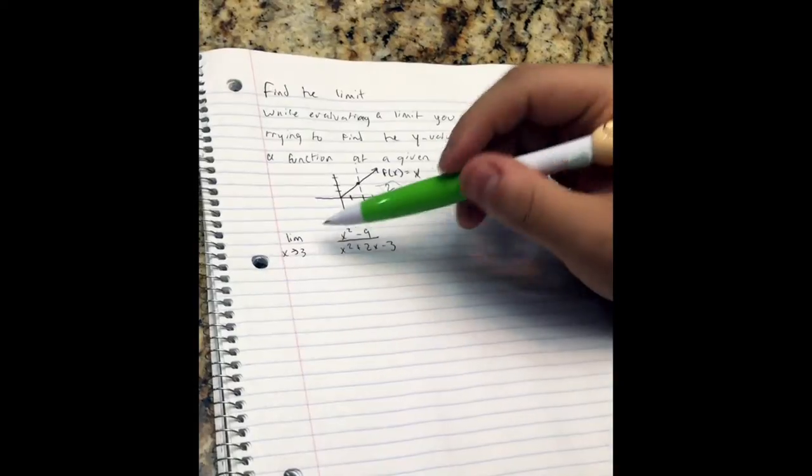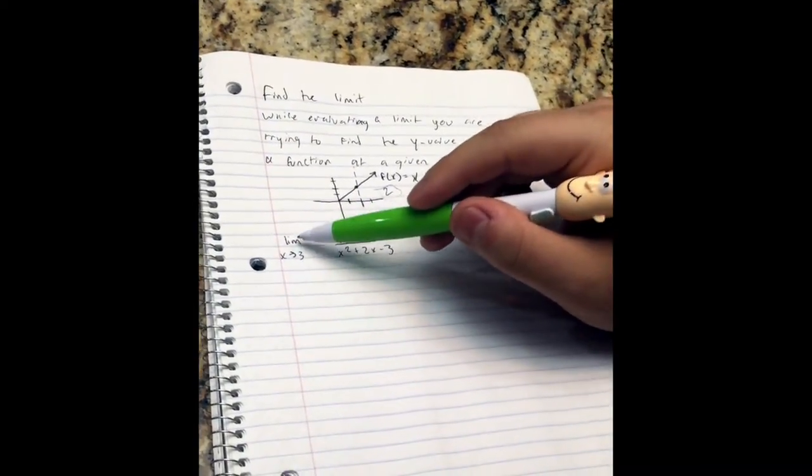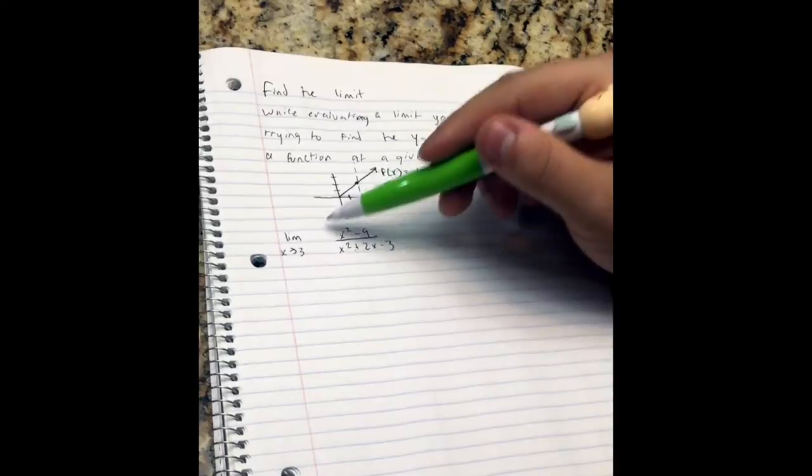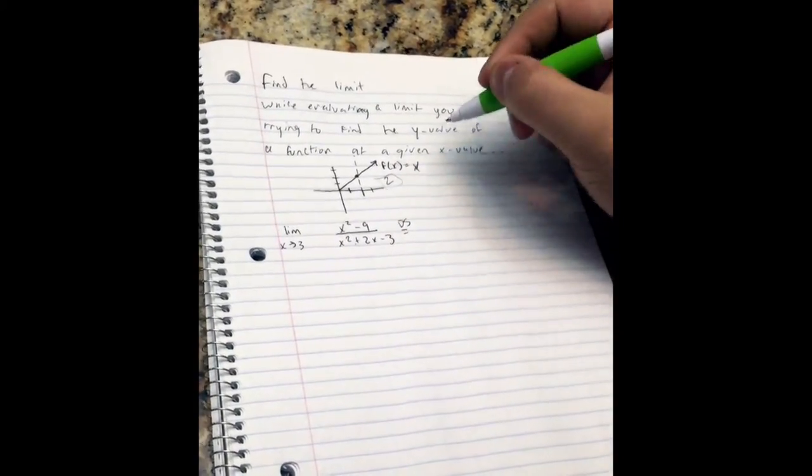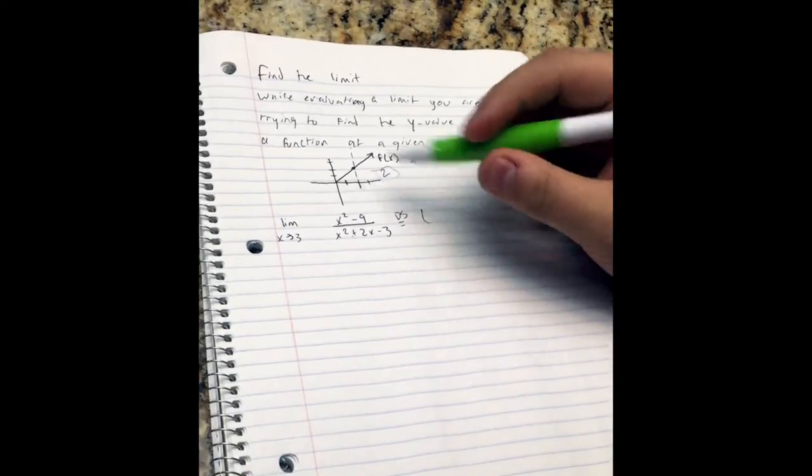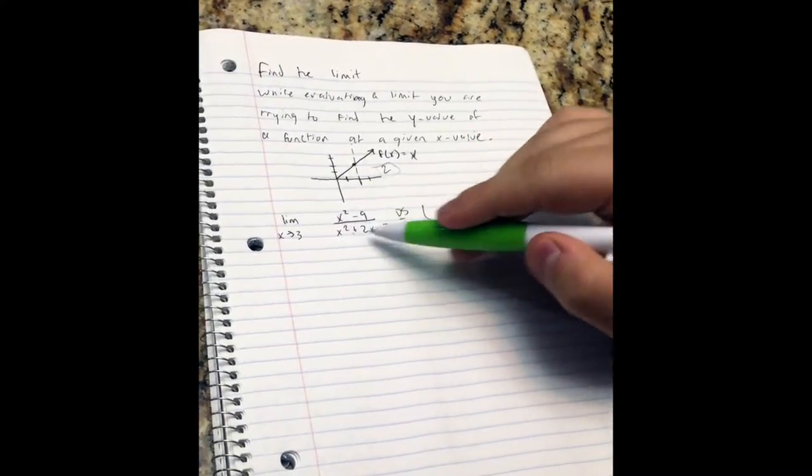Now, what you want to do when you get a problem like this is limit as x approaches 3 of your function over here. You want to try a direct substitution first. So you would plug in the 3 for every x value you see in the function.